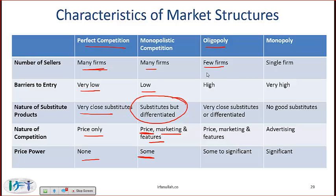With an oligopoly we have a few firms — two, three, or maybe four. Barriers to entry tend to be high, which is why we have few firms. Products are often very close substitutes but can also be differentiated — that is not a major issue in an oligopoly. Price, marketing, and features are the basis of competition, and pricing power might be significant for some companies.